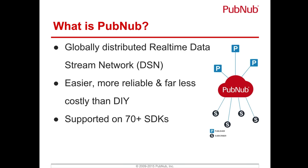So what is PubNub? PubNub is a globally distributed real-time data stream network — a DSN. We manage data flowing from applications to other applications across platforms globally, so you can write real-time solutions such as chat or IoT. We're easy to use with a very simple API. We're very reliable and far less costly than doing it yourself — setting up this type of infrastructure would probably run you several hundred thousand dollars and you'd still have a hard time scaling it. We do that for you, taking the burden of managing and monitoring that infrastructure so your applications stay up and supported.